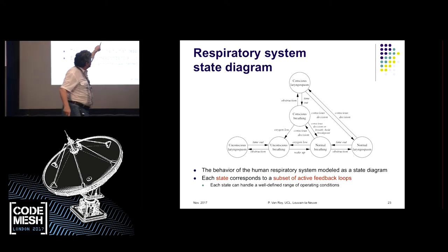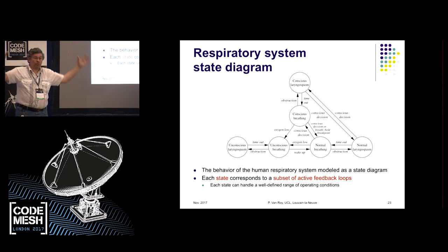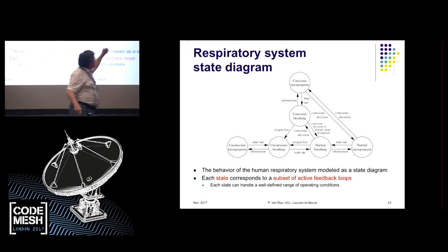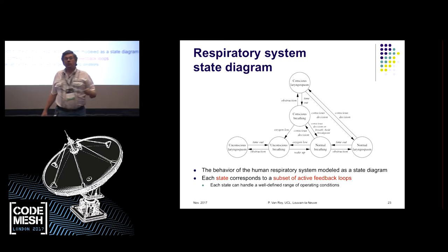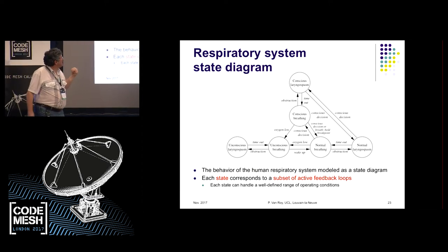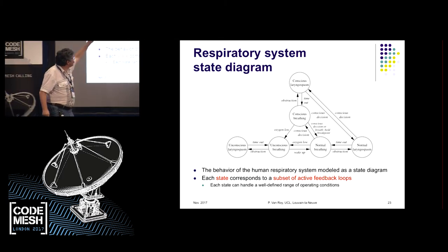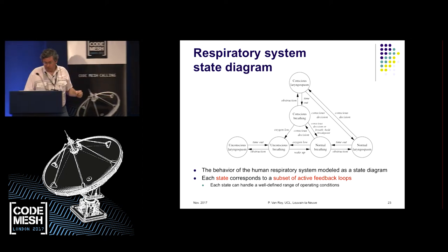You can look at this structure as a state diagram. Each state in the diagram corresponds to a subset of the loops in the feedback structure being active. With all those loops, at any given point some are active and some are inactive. Normal breathing is the normal case — one loop is active. If there's an obstruction in the airways, you go to normal laryngospasm where two loops are active. Usually conscious control also becomes active, transferring to 'conscious laryngospasm,' and eventually it goes back to normal breathing.